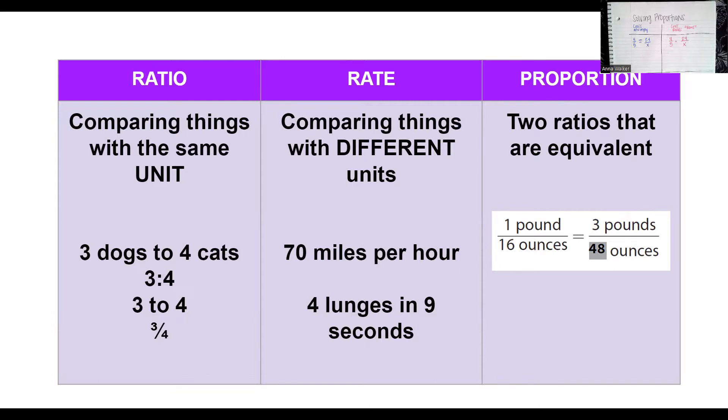And so the way that we can write ratios and proportions, we can write them as fractions. That's going to be the most common way. You can use the colon symbol, the two dots between the numbers. You could just write the word to. But the most common way we're going to do it is write it like fractions. This is just going to make our math a little bit easier to visualize and complete.